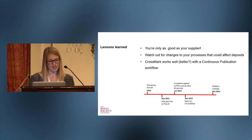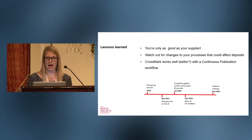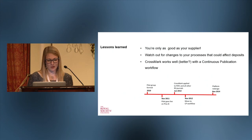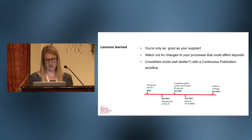We also moved to a continuous publication workflow in November 2012, which was completely unrelated to the Crossmark project, but we found they were really happy bedfellows. Crossmark is built to track different DOIs and the relationships between them. With a continuous publication workflow, articles were published online in their final version straight into an issue, meaning any updates were published as a correction or retraction — so there was always a relationship between two different DOIs rather than versioning the same DOI. We find that Crossmark works really well with that workflow.